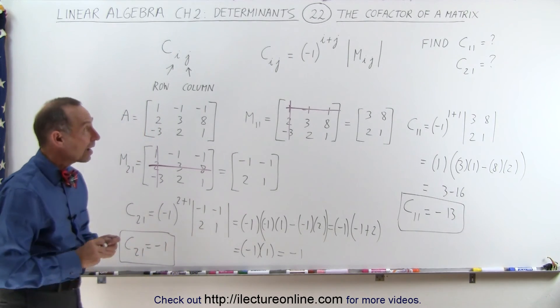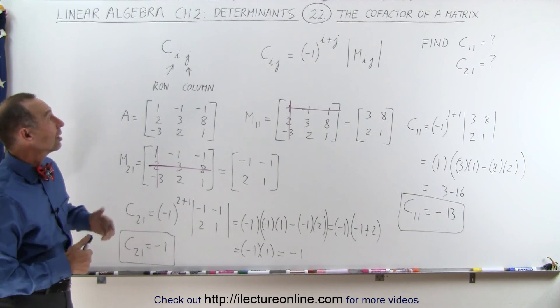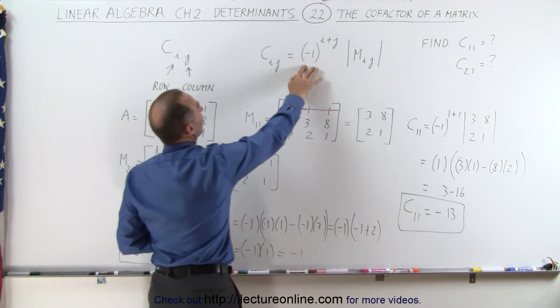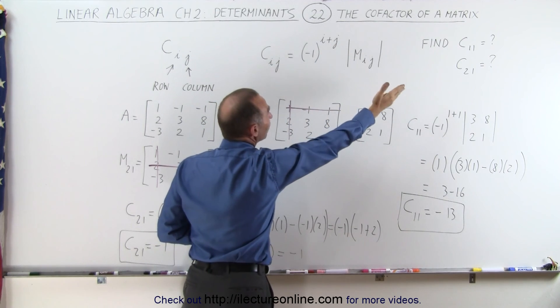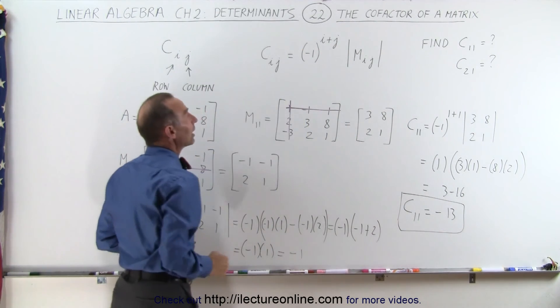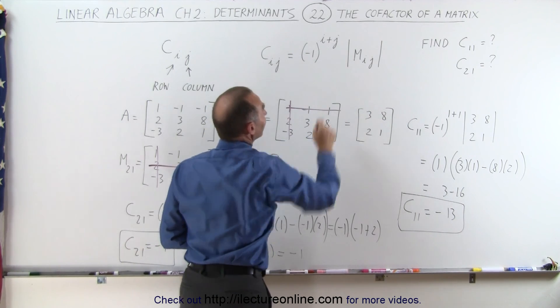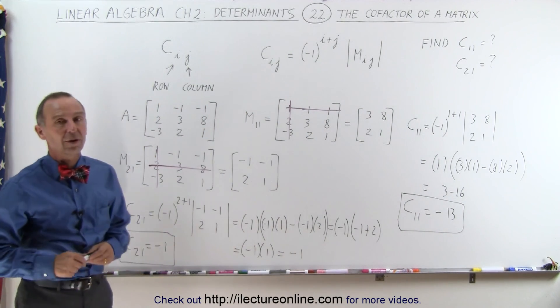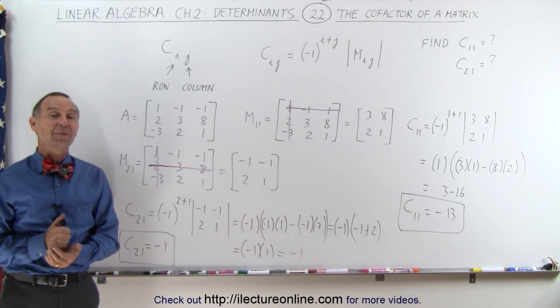And that is how we find the cofactors of matrices by using the definition: minus 1 raised to the i plus j power. Therefore, when the numbers add up to an even number, you get a plus. When they add up to an odd number, this becomes minus 1, times the determinant of the minor matrix. And that's how it's done.